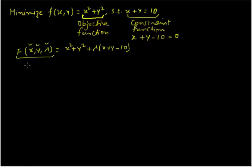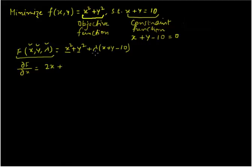This is going to give us a system of equations which we can solve for x, y, and lambda. First of all, we are taking the partial derivative of function F with respect to x. From the x squared term we get 2x, from the y squared term we get nothing, and from the lambda term we get lambda. And we are going to set this equal to 0.